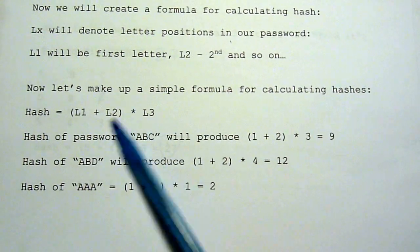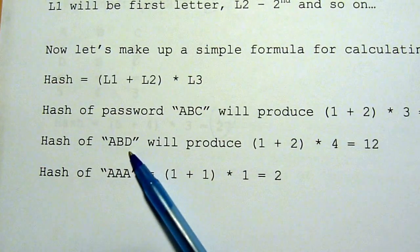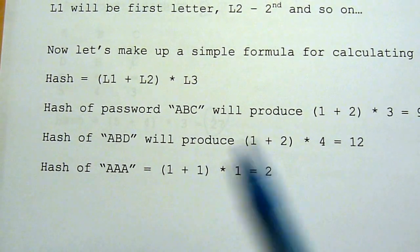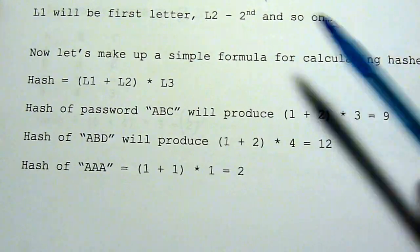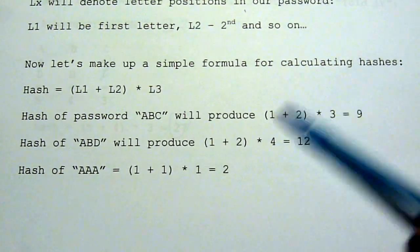And if we try to calculate hash of ABD, 1 plus 2, multiply 4, 12. And AAA will be 1 plus 1, multiply 1 equals 2. So you can see similar data produces completely drastically different hash output.